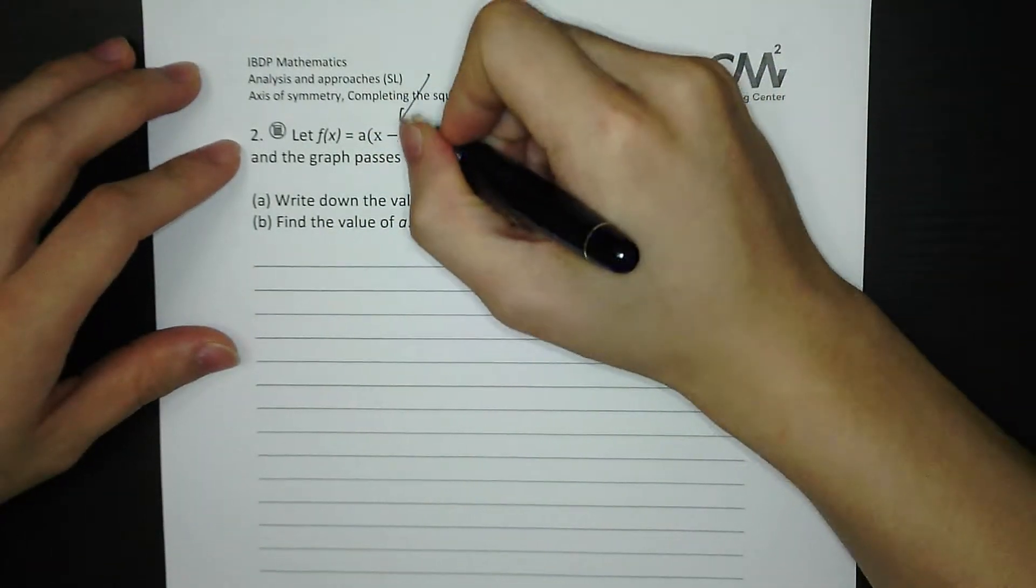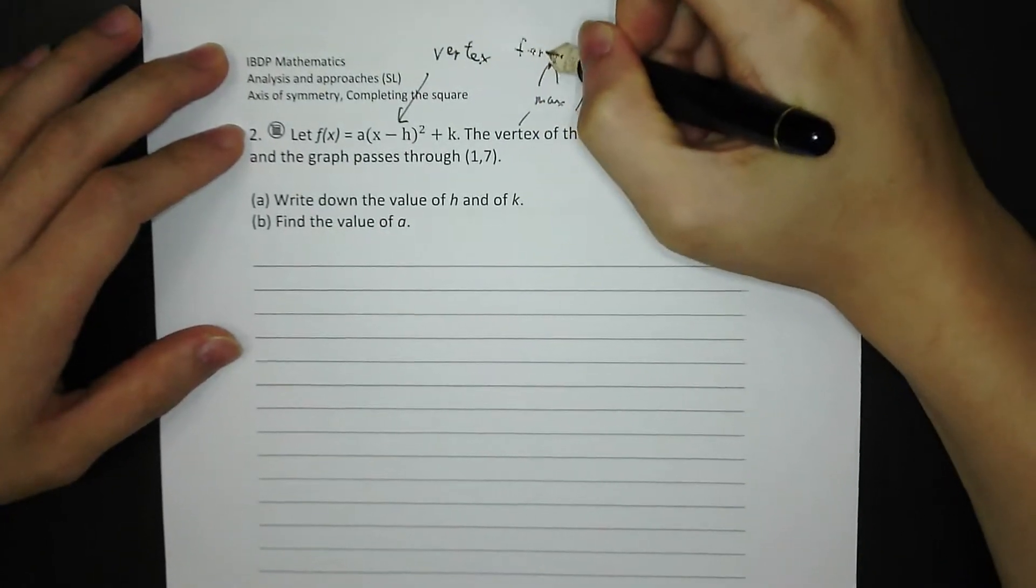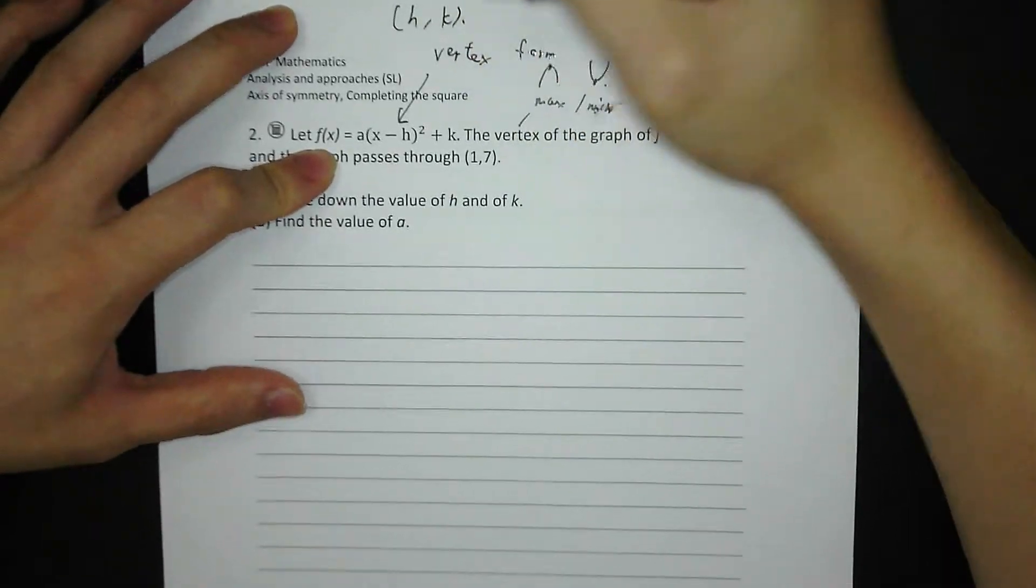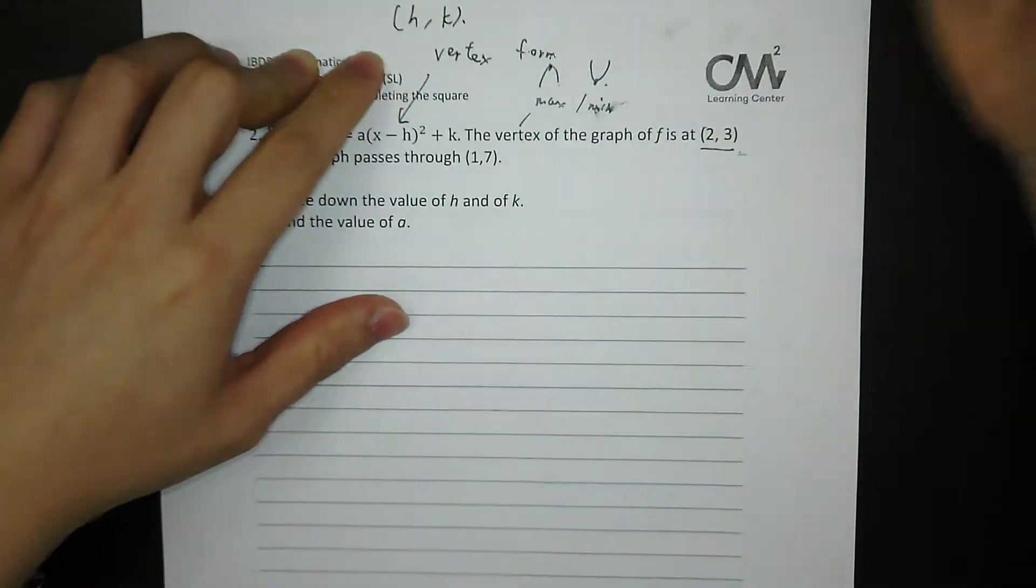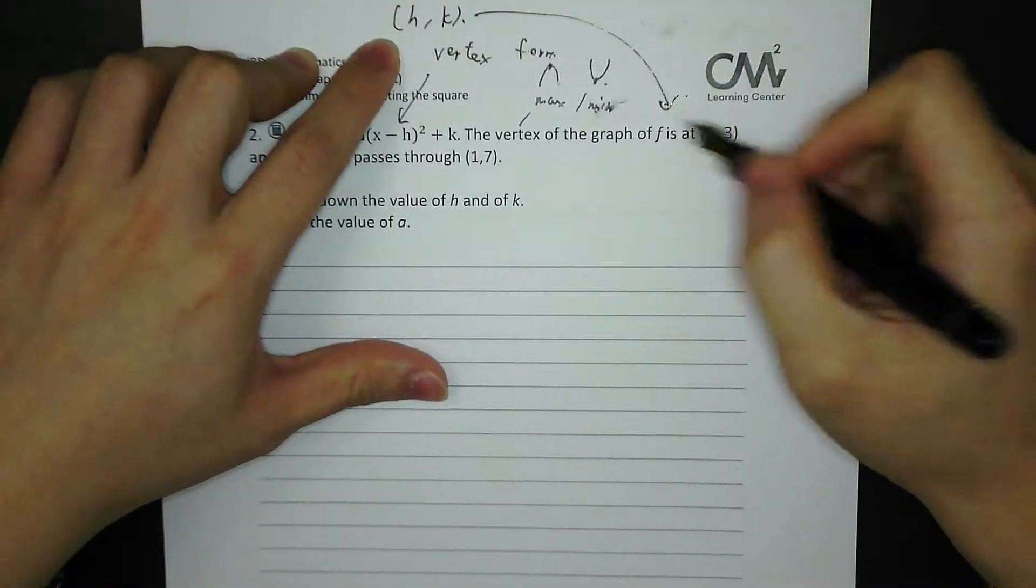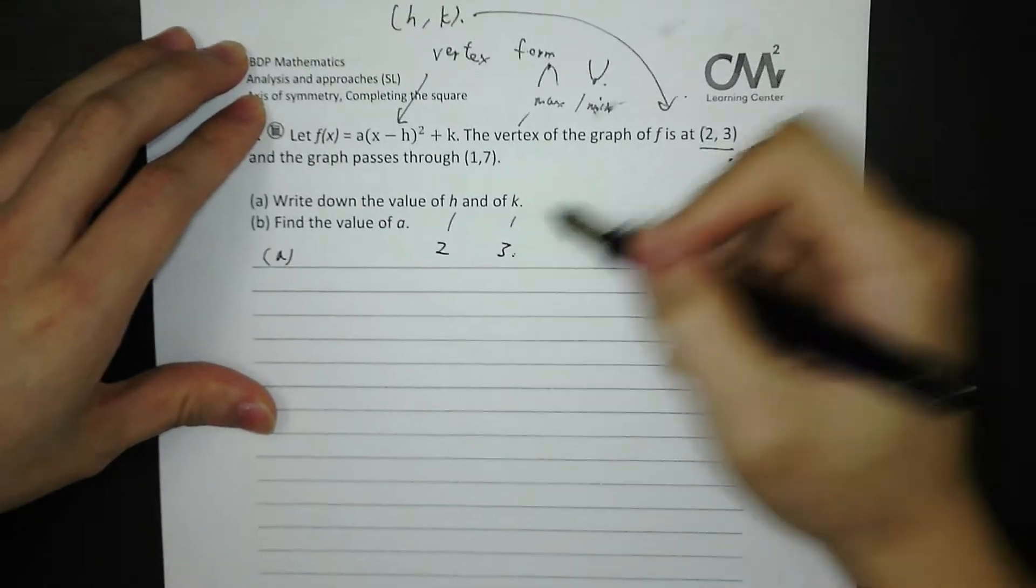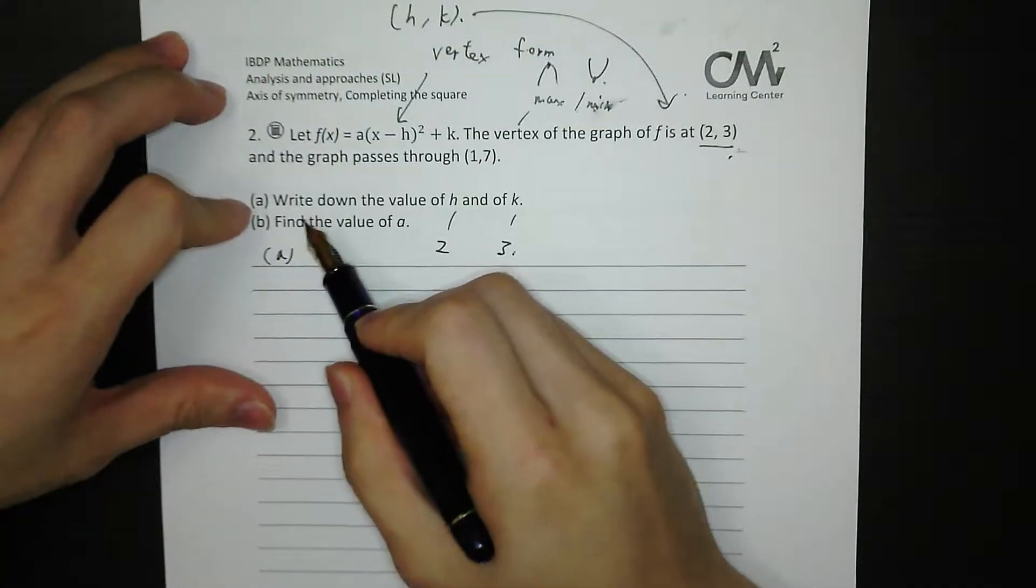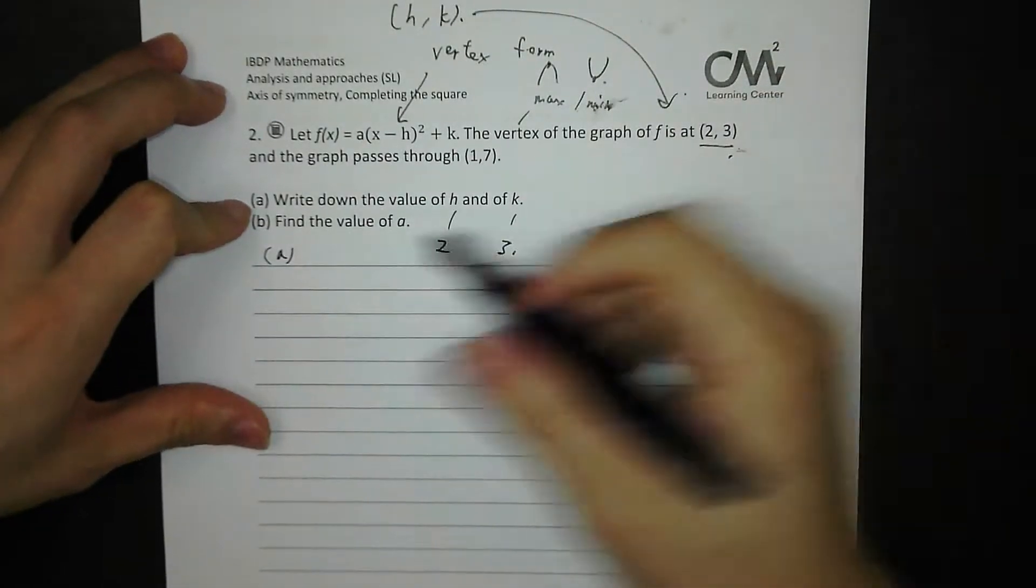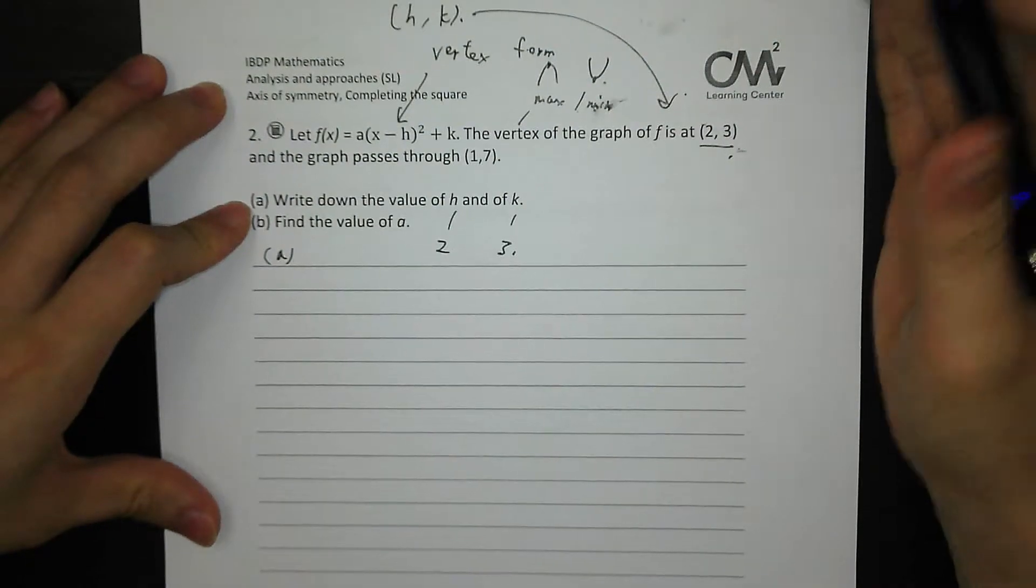So that's called vertex form, because the h and k are the x and y coordinates of the vertex. So you see 2 and 3, so h is 2, k is 3. Part A, write down the value of h and k: 2 and 3. You see the word 'write down', you don't need to calculate. It's just a one or two mark question. You can find it easily from the question, from the graph.